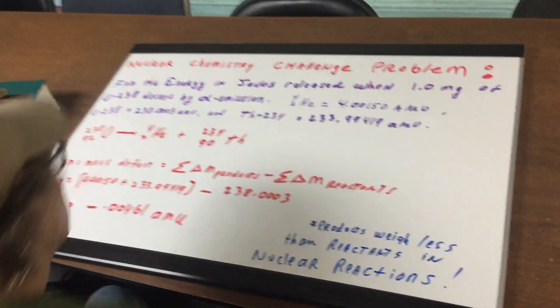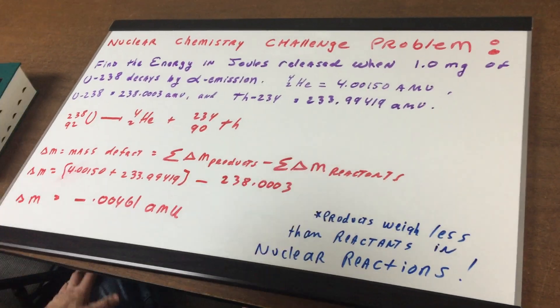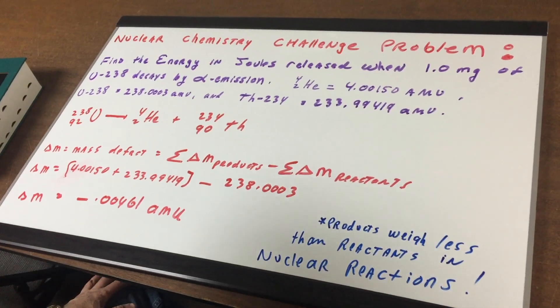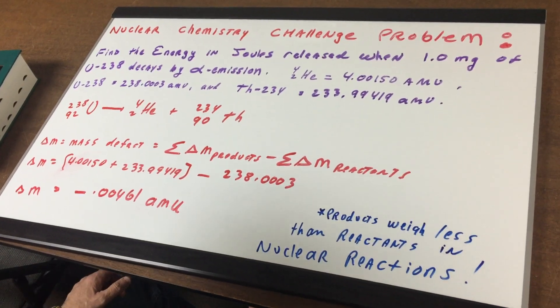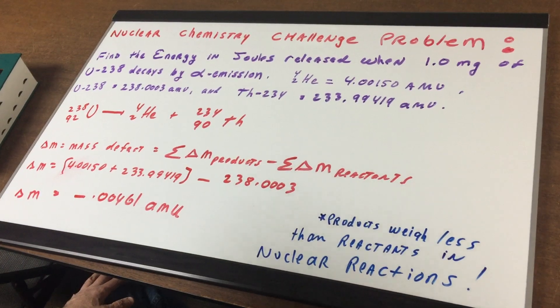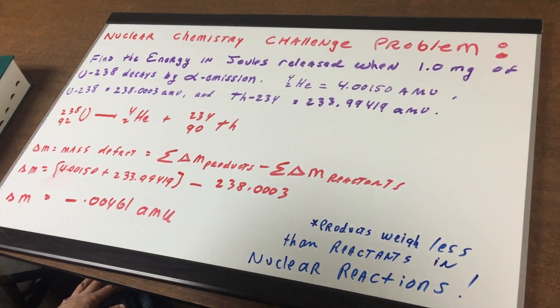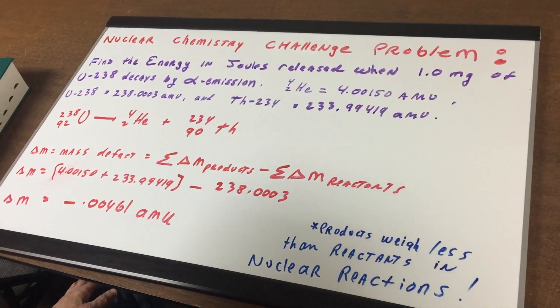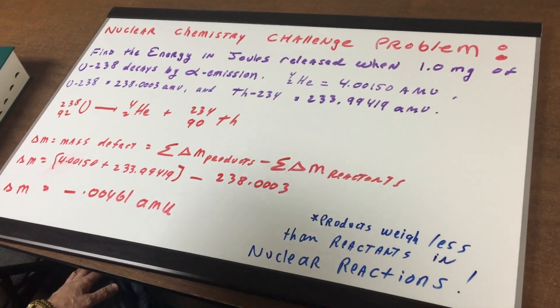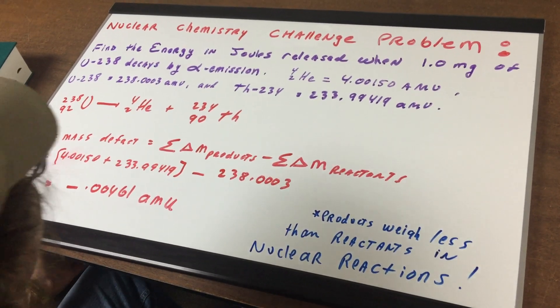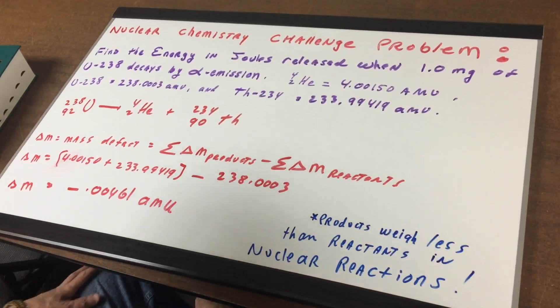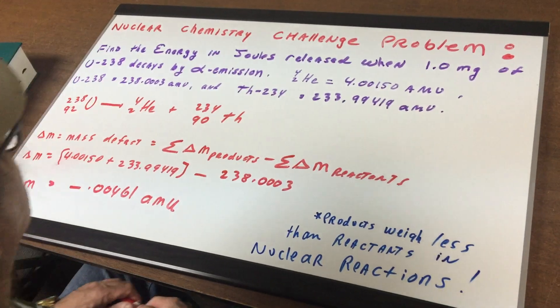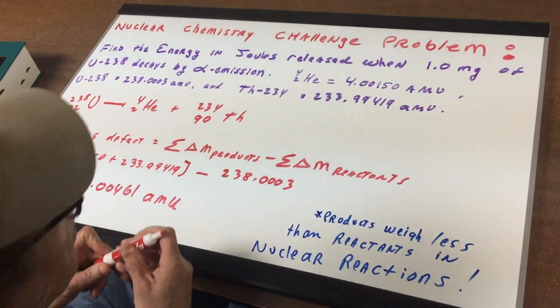In a nuclear reaction, we're going to be transforming one element into a new element and we deal with very unstable nuclei. The one thing that's very different about a nuclear reaction than a normal reaction that you're used to seeing is that the rate is unaffected by temperature and pressure and things like catalysts. So this is some very unusual chemistry in which we see one element transforming into another element.